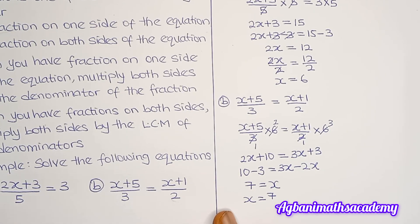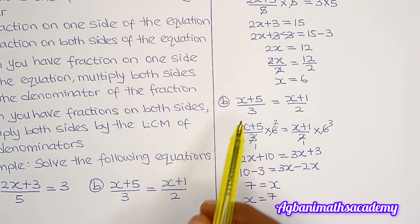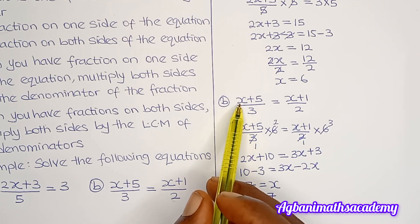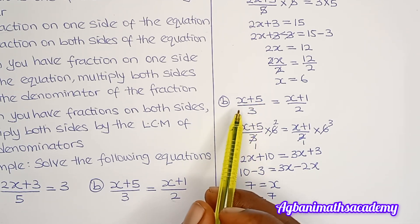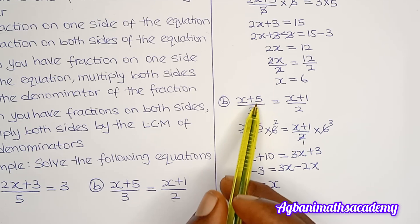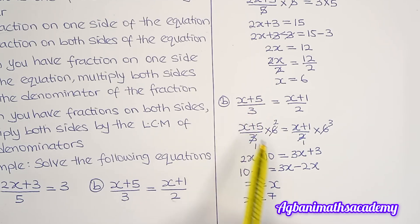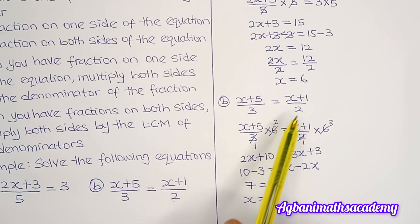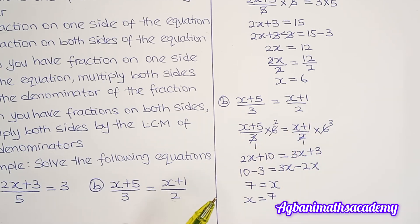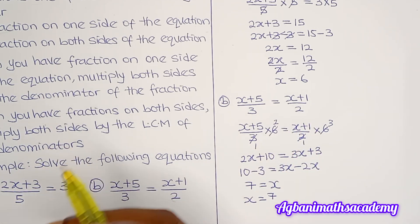That is our answer: x = 7. Let's confirm: substituting 7, on the left we get 7 + 5 = 12, and 12 ÷ 3 = 4. On the right, 7 + 1 = 8, and 8 ÷ 2 = 4. Both sides equal 4, so our answer is correct.